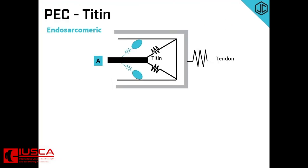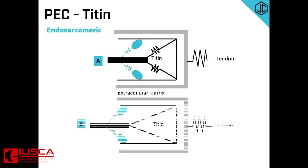I would like to briefly discuss the titin filament, which attaches the myosin filament to the Z-disc. I have included the titin filament within the PEC as it produces passive tension when the muscle or sarcomere is stretched. Because it is found within the sarcomere, it is responsible for endosarcomeric passive tension. The importance of titin as a source of elasticity has been proven, as researchers have shown that when titin was destroyed within the muscle, there was a decrease in resting tension. A sarcomere has resting tension as shown in diagram A, and when the actin and myosin filaments slide past to longer lengths, the resting tension increases due to titin elongation as seen in diagram B. Many researchers believe the titin filament to be a major source of muscle elasticity.